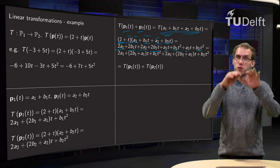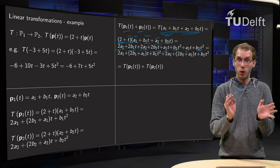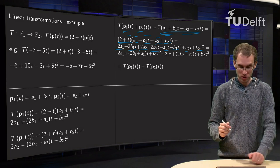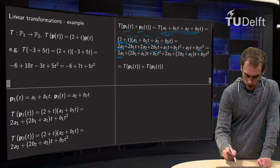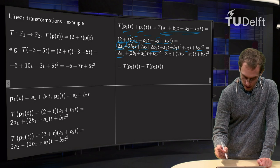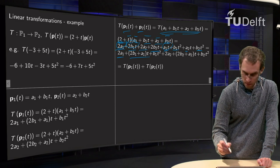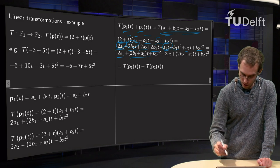And now we first put all terms with the ones and then we put all terms with the twos. So we have 2 times a1 there, a 2b1t and here an a1t over there and then we have a b1t squared over here.